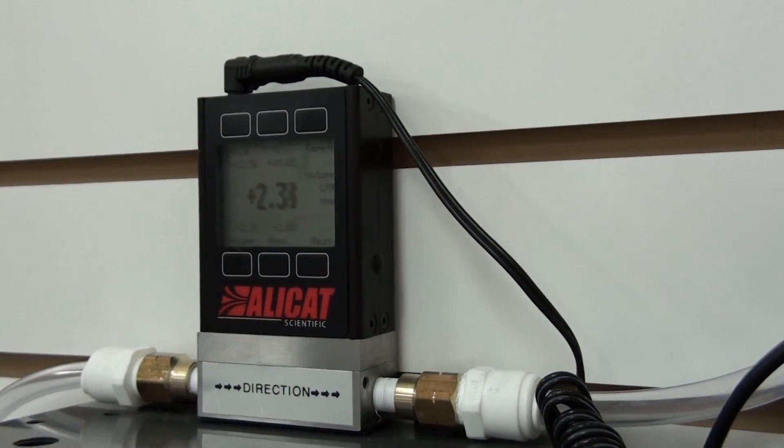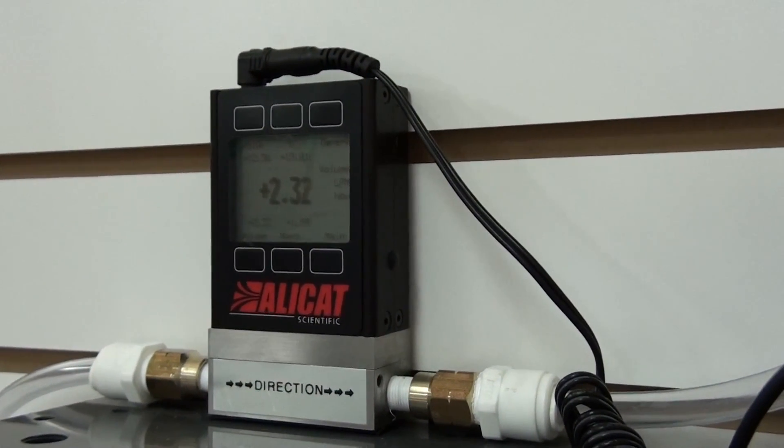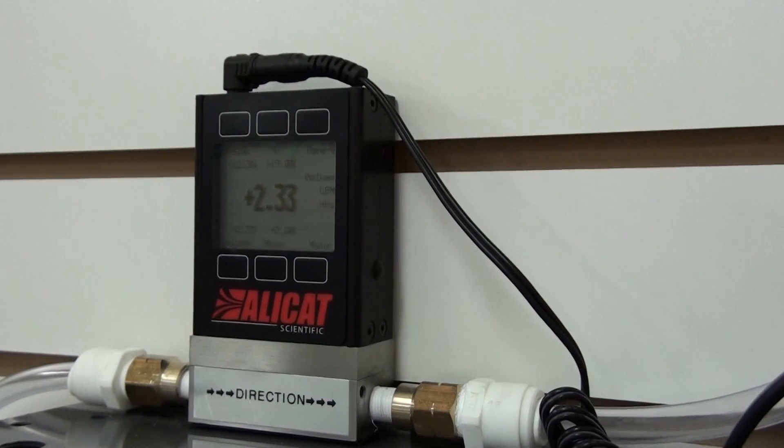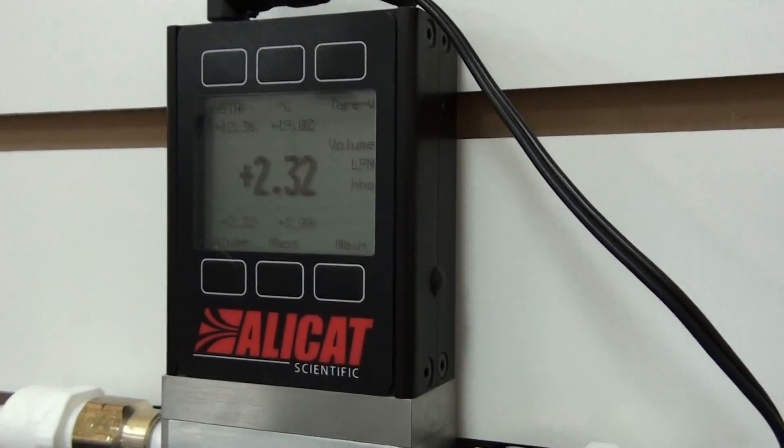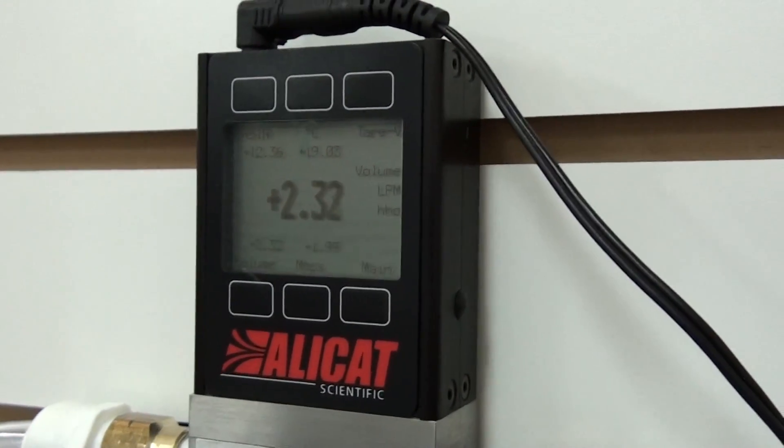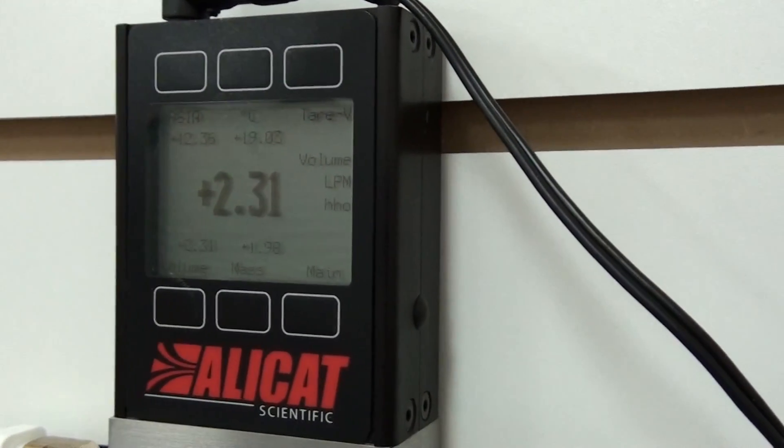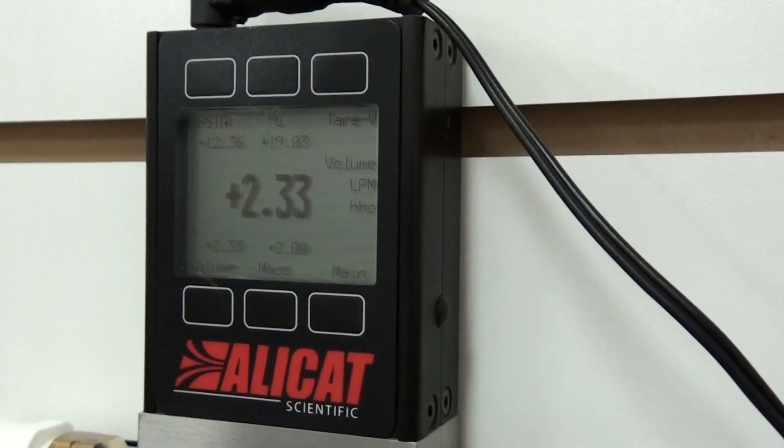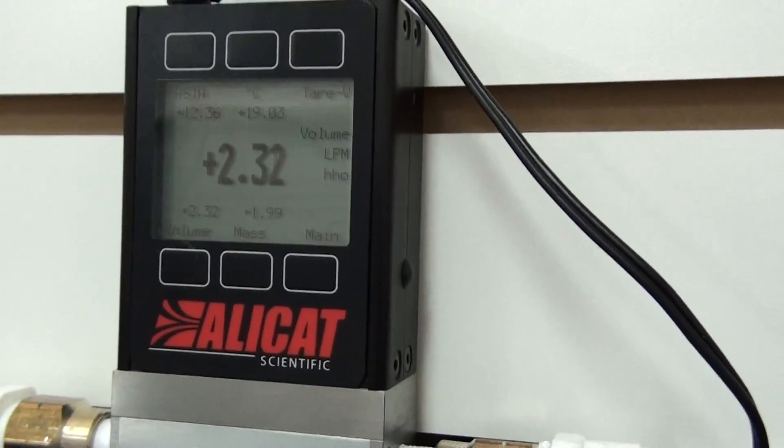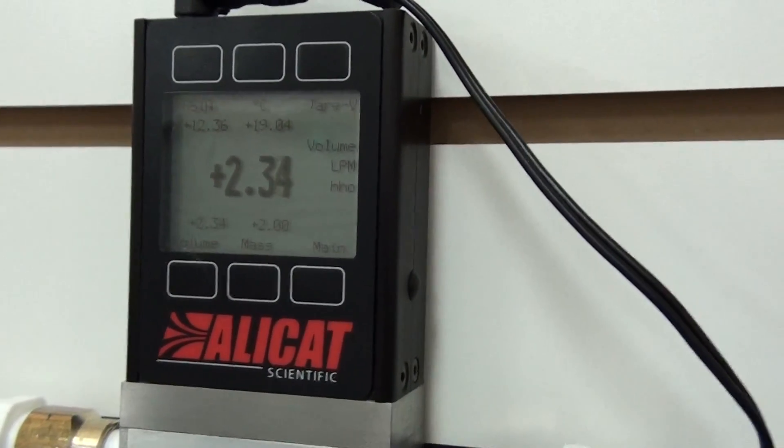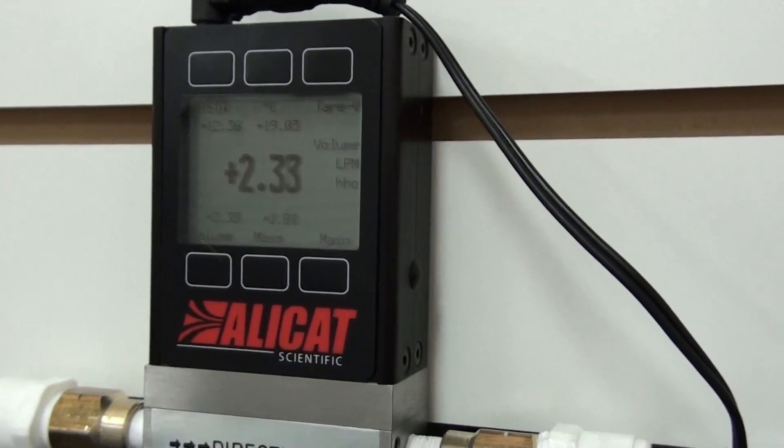Right here we have a flow meter. It measures the amount of HHO production coming off of the cell. Right now it is running at 2.3 liters per minute. And you can see the meter is calibrated for HHO. The gas temperature is about 19 degrees Celsius. That's about 65 degrees Fahrenheit.